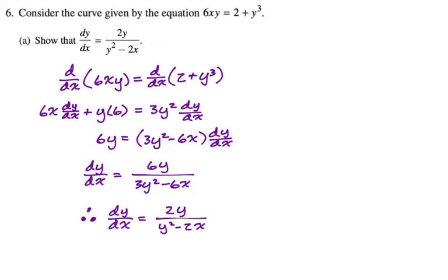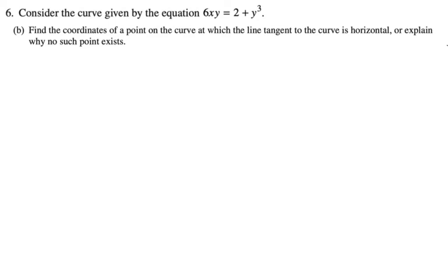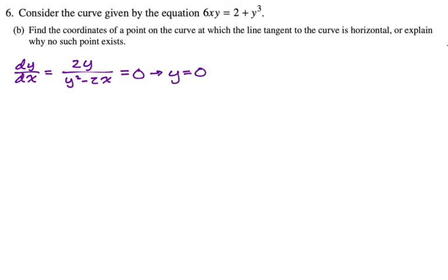Now let's find the coordinates of a point on the curve at which the tangent line is horizontal, or explain why no such points exist. For a horizontal tangent, we need dy/dx equal to 0. If dy/dx equals 0, that means 2y equals 0, or just y equals 0.